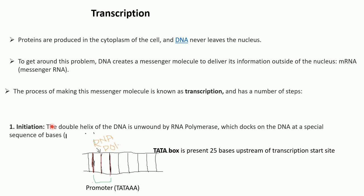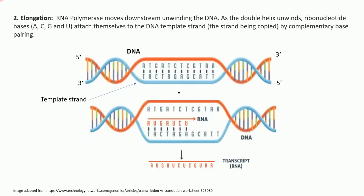Transcription has several steps. The first step is initiation. The double helix of DNA is unwound by RNA polymerase, which binds to the DNA at a special sequence called the promoter. This promoter is actually a TATA box, present 25 bases upstream of the transcription start site. During initiation, the RNA polymerase binds to the promoter upstream of the target gene.